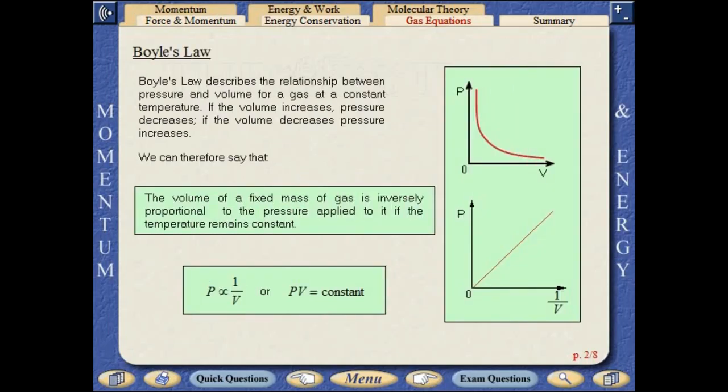Boyle's law describes the relationship between pressure and volume for a gas at a constant temperature. If the volume increases, pressure decreases. If the volume decreases, pressure increases. We can therefore say that the volume of a fixed mass of gas is inversely proportional to the pressure applied to it if the temperature remains constant.